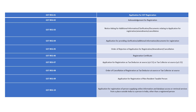GST REG-07 is the application for registration as a tax deductor at source or tax collector at source. GST REG-08 is the order of cancellation of registration as a tax deductor at source or tax collector at source.